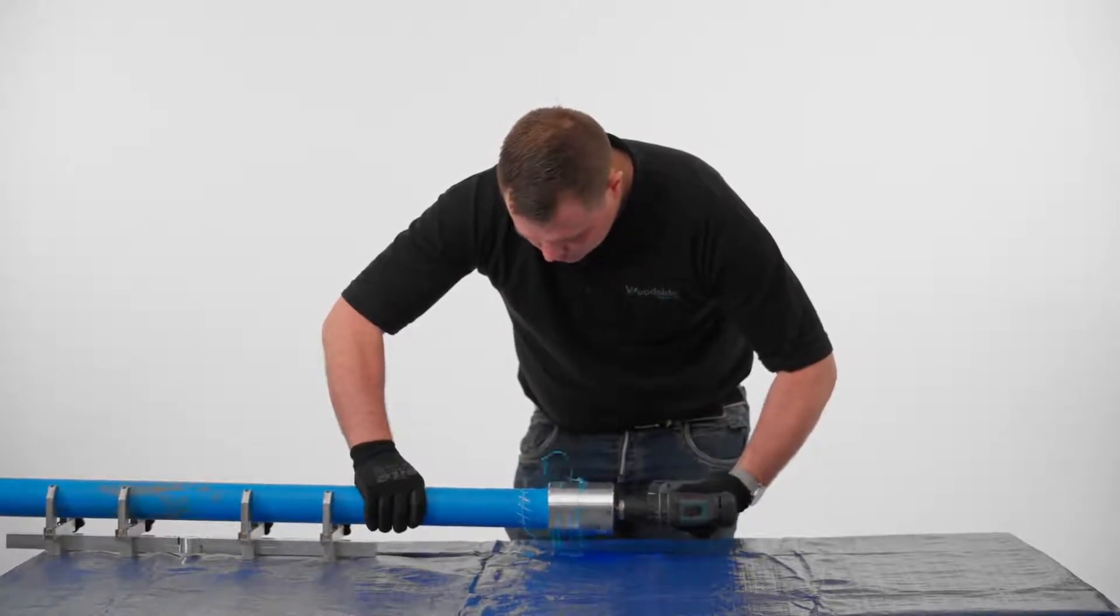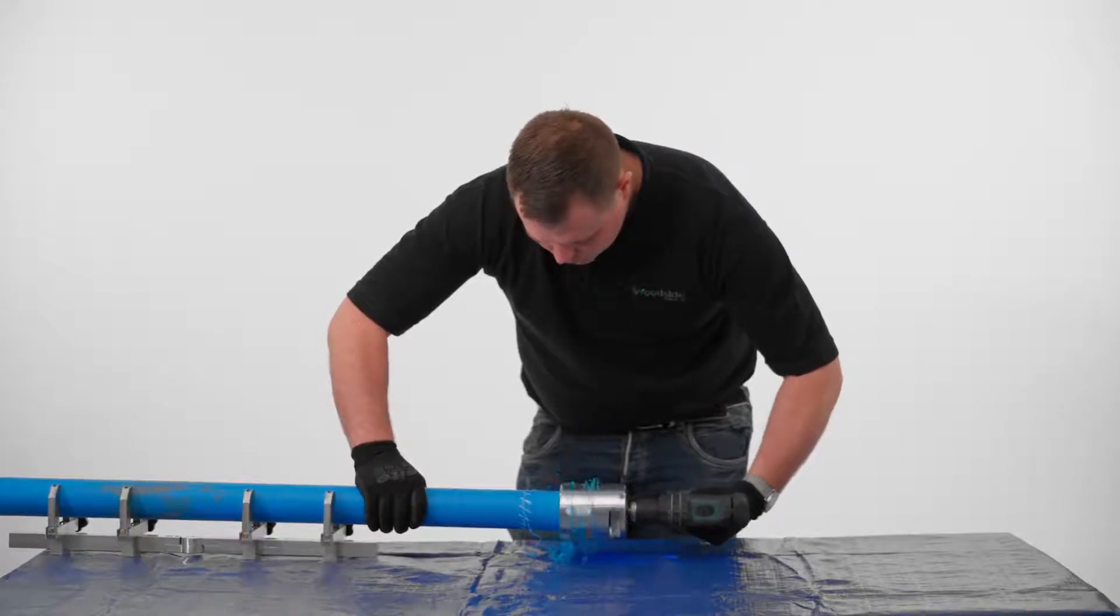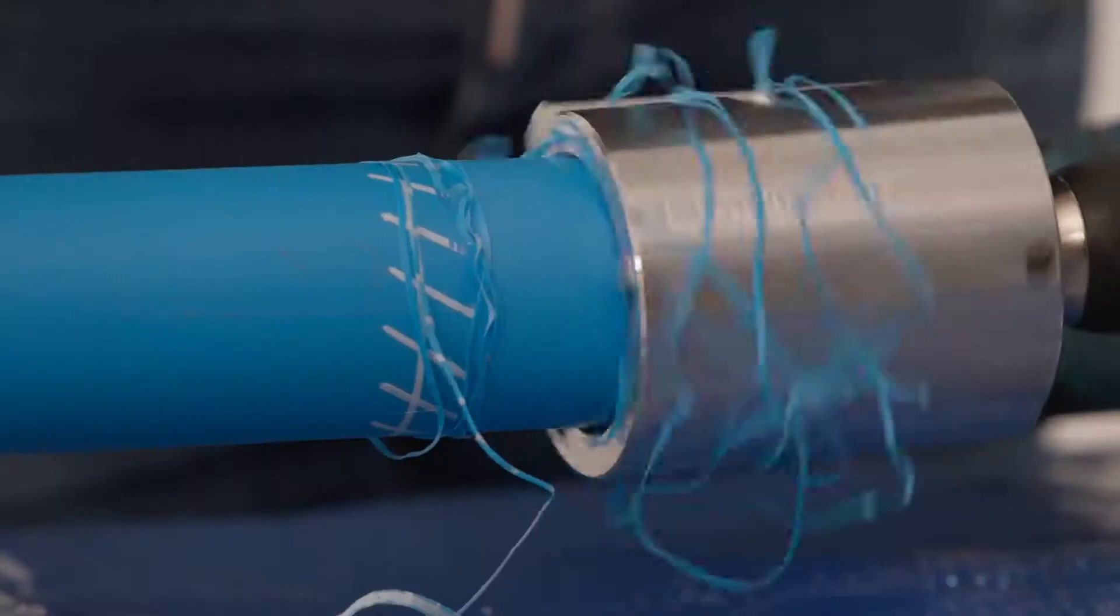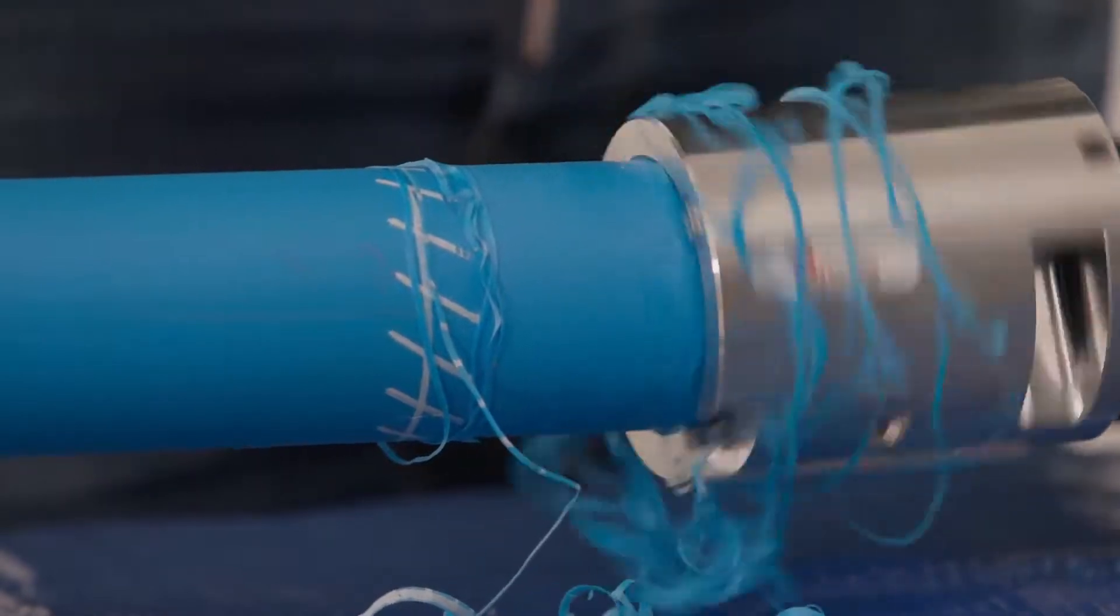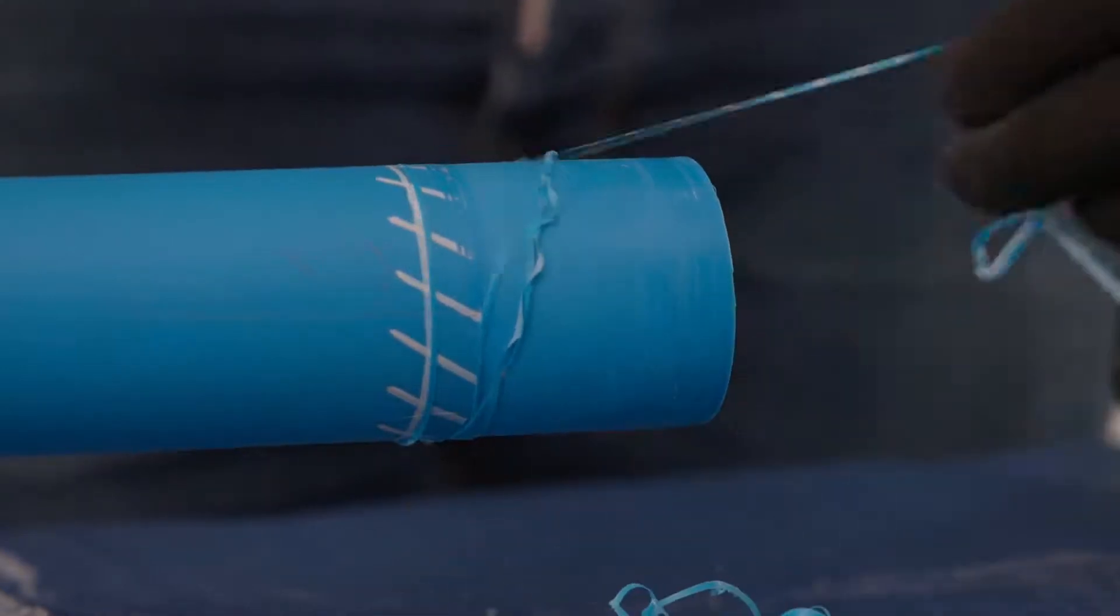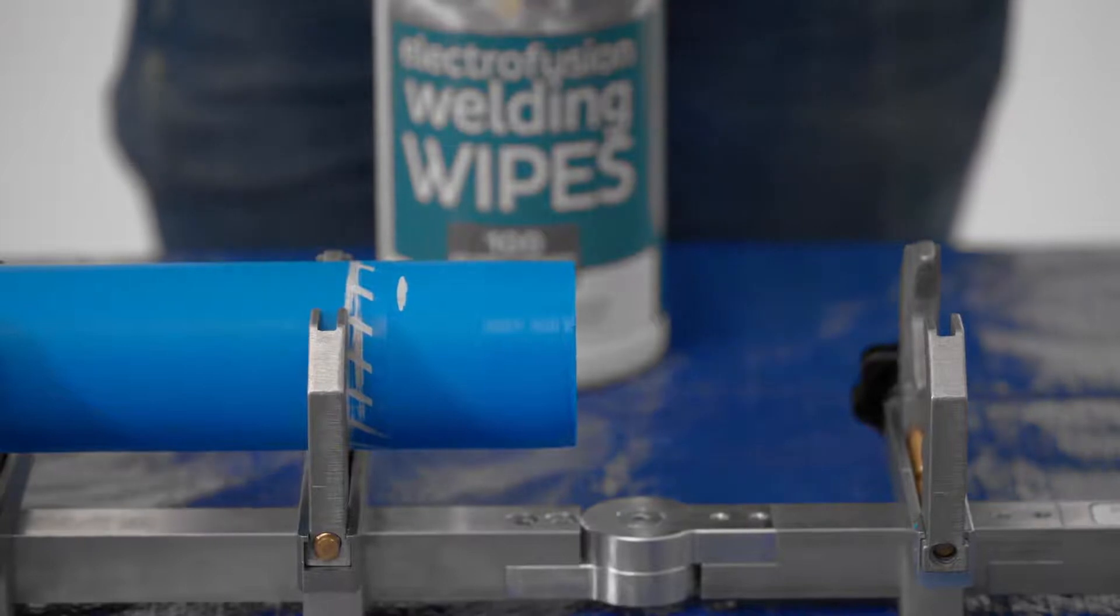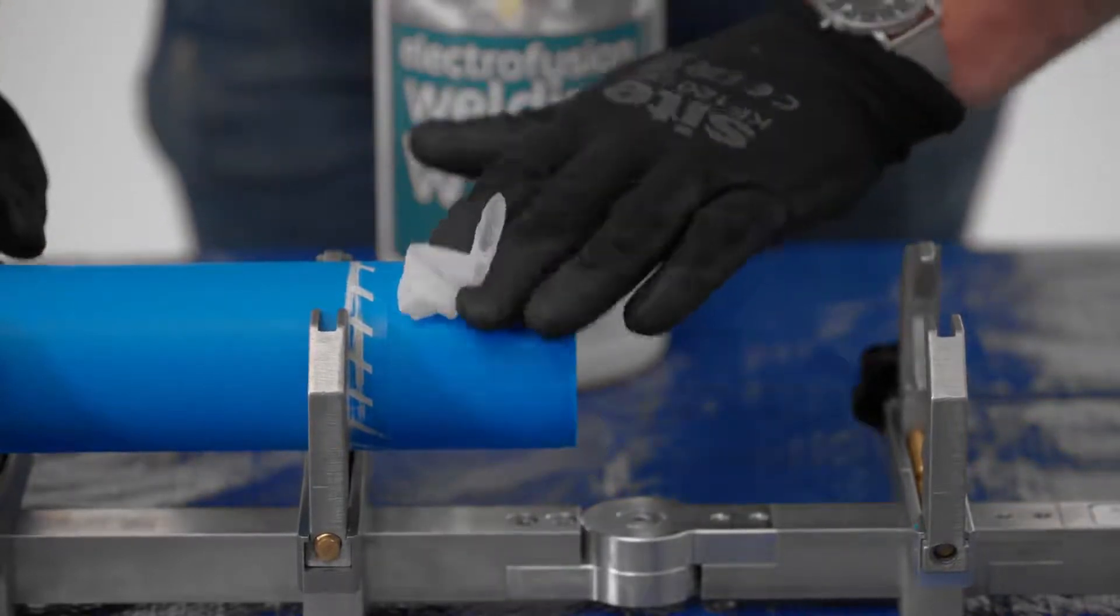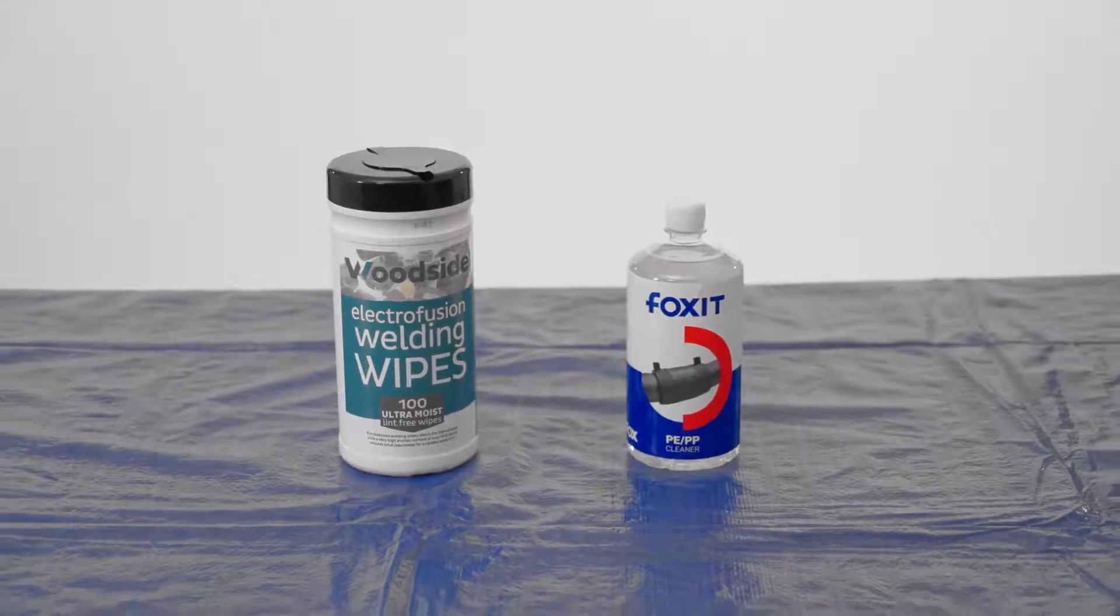This is known as the oxide layer. Be careful to not touch the prepared pipe end as natural oils present on your skin can contaminate and spoil a weld. Do not allow the prepared pipe end to come into contact with any moisture, dust, or dirt. If contamination accidentally enters a prepared joint, it should be cleaned with an alcohol wipe or fluid with at least 90% alcohol content.